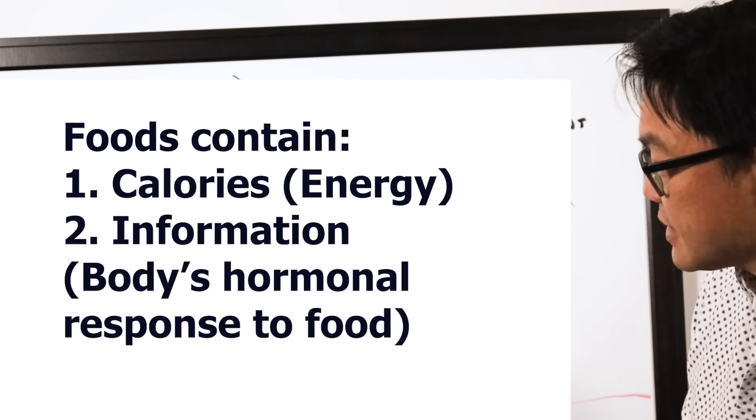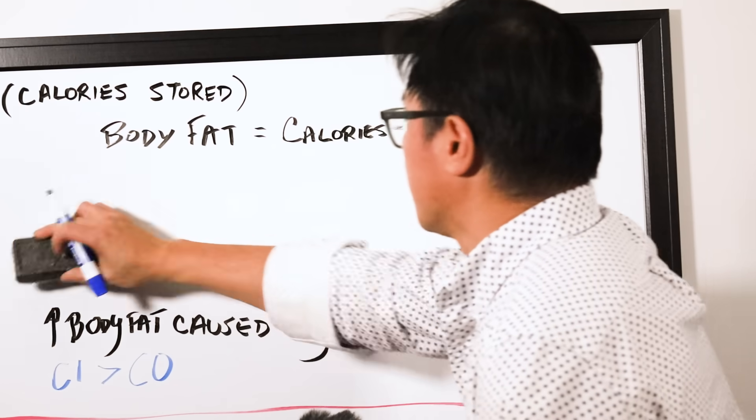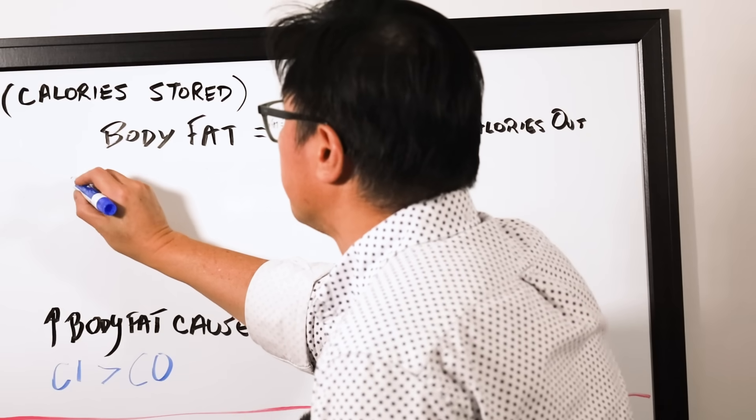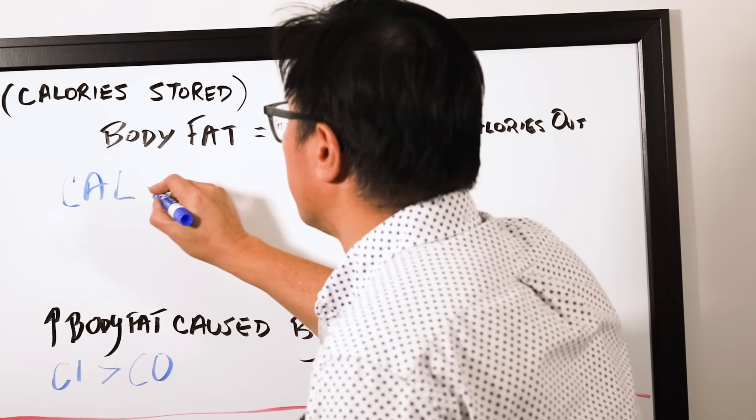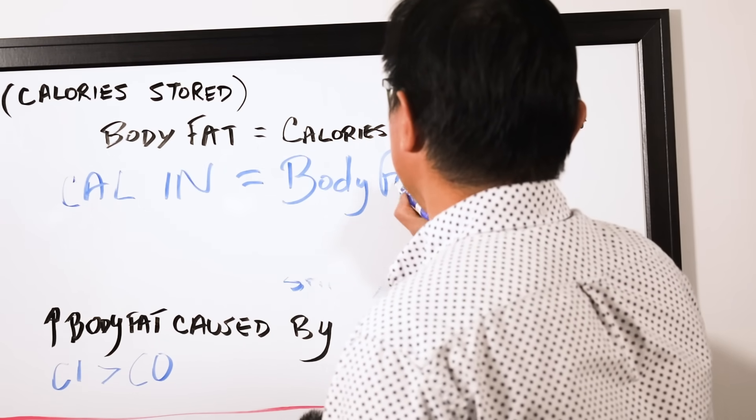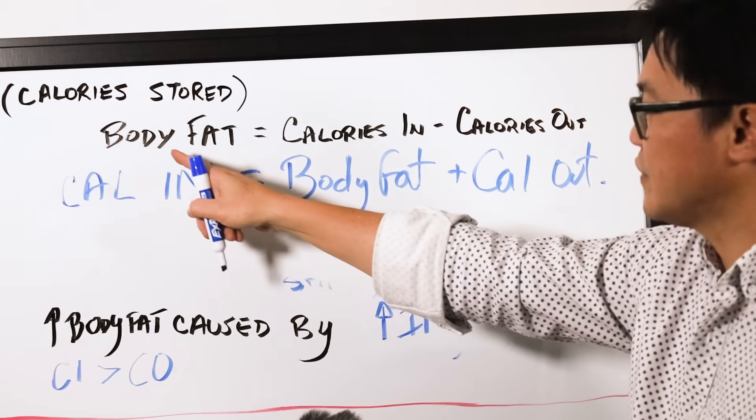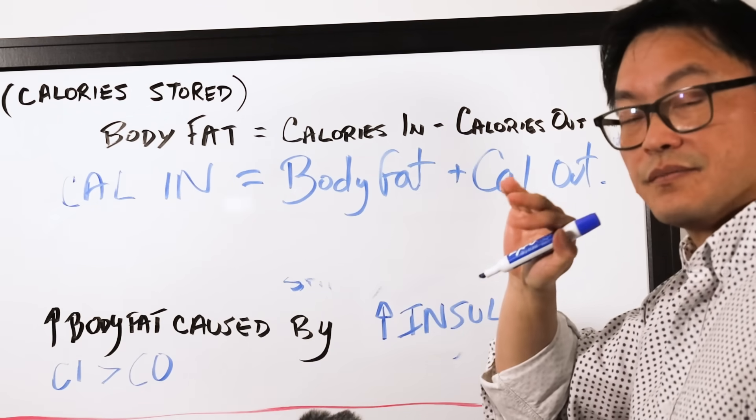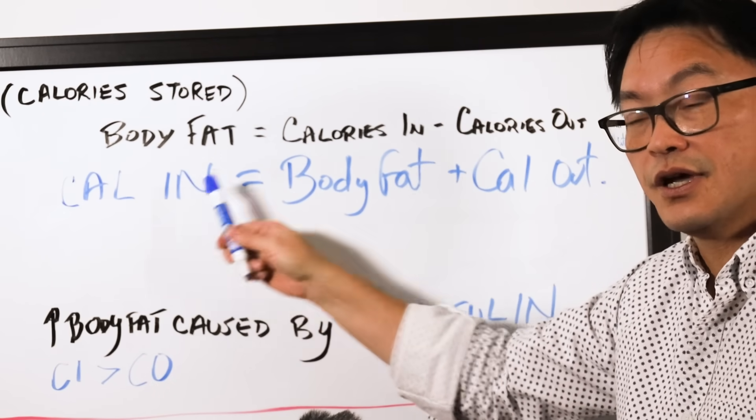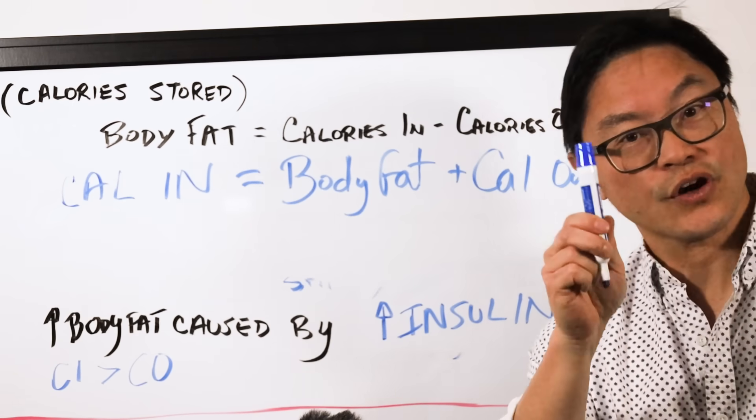If we simply take this equation now, and turn it around, and simply move to the calories in, equals body fat plus calories out. I simply move the calories out over here. Same equation, energy balance equation.